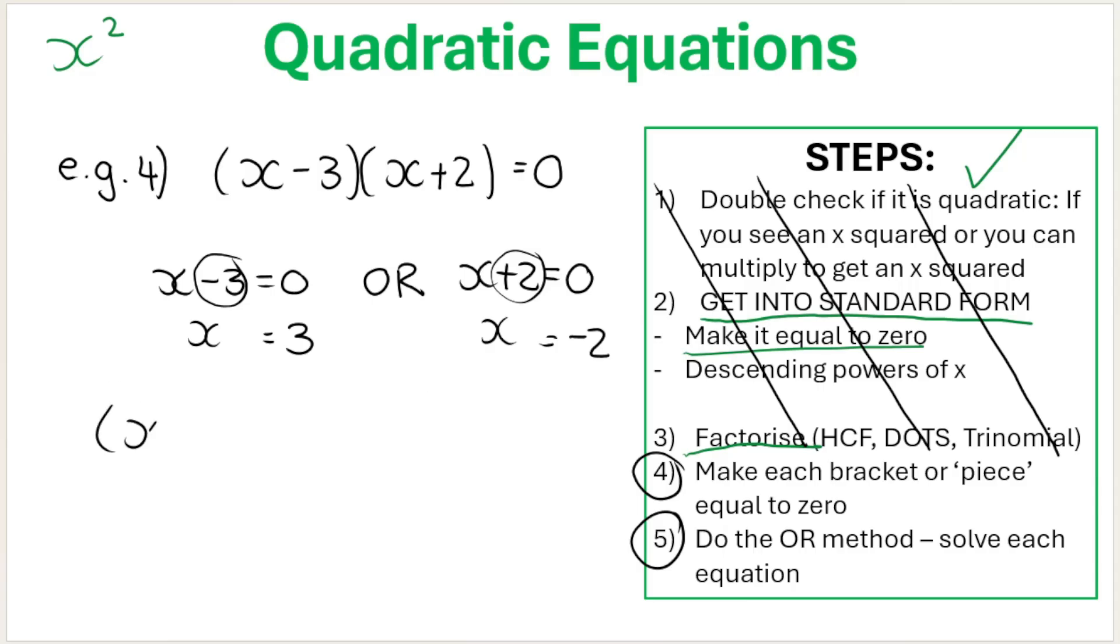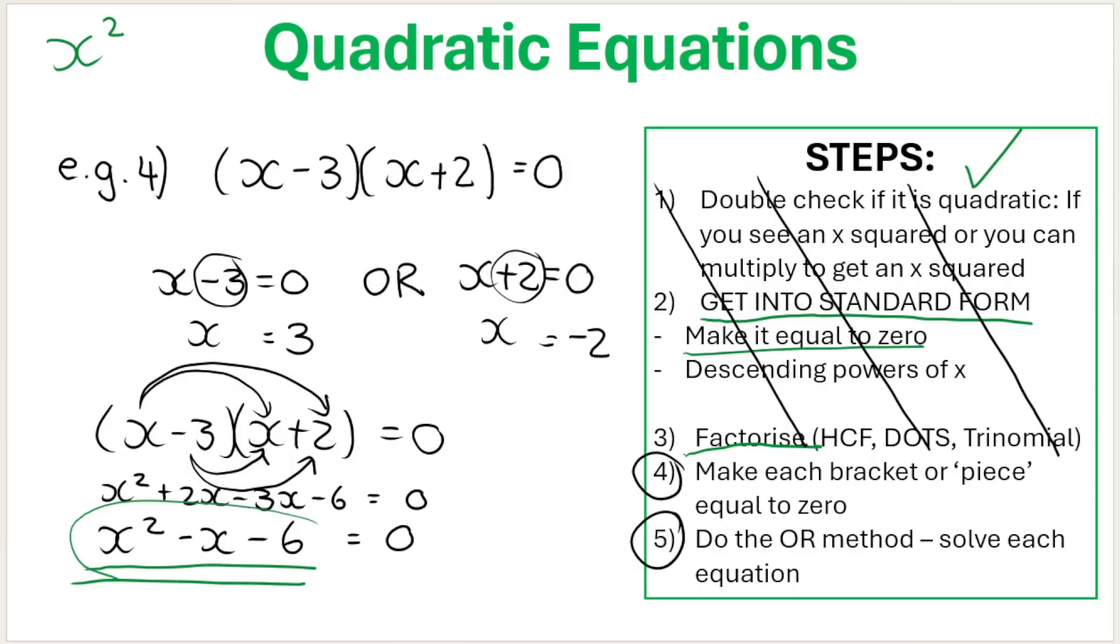Now, what I see a lot of students doing, which is wrong, is they think that when they get this in the exam, they must distribute or do the FOIL method or binomial times binomial method and get this. But now if you do that, what are you going to do now? Do you see what the issue is? When you get to this stage, now you see there's an x squared, so now I must factorize. And if you factorize, you're just going to get right back to where you started. So don't do that.